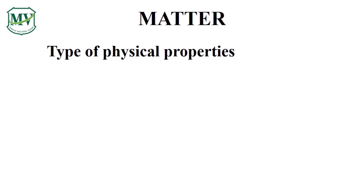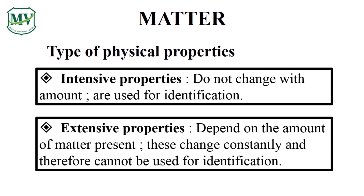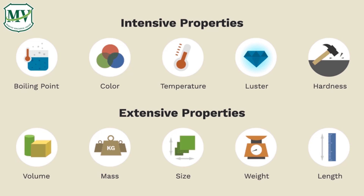Physical properties can be intensive or extensive. Intensive properties do not change with the amount of matter, while extensive properties change constantly depending on the amount. For example, the mass of a gold bar may vary depending on its amount, but the color of gold will always be the same.